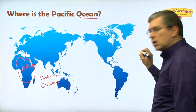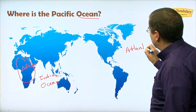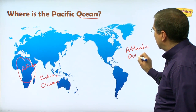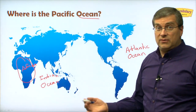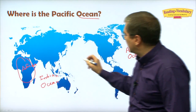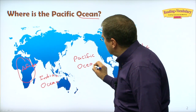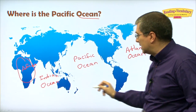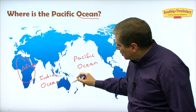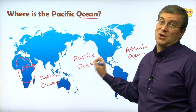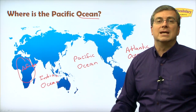So the Pacific Ocean is over here, right? No — this is the Atlantic Ocean. The Atlantic Ocean is between the Americas and Europe and Africa. So where can the Pacific Ocean be? It's this big one here! This is the Pacific Ocean. Wow, look at it. It's the biggest ocean in the world. Look at how big that is — it's huge! The Pacific Ocean is between the Americas and Asia, Indonesia, and Australia. That's the Pacific Ocean.